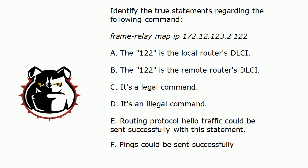Identify the true statements regarding the following command. We've got a command of: frame-relay map ip 172.12.123.2 followed by the number 122. First thing we need to determine between A and B is whether 122 is the local router's or the remote router's DLCI — or of course it could be none of them. C or D: it's a legal command or an illegal command. And then with E and F, I'm asking you whether you could send routing protocol hello traffic, and whether you could send pings successfully with that map statement.